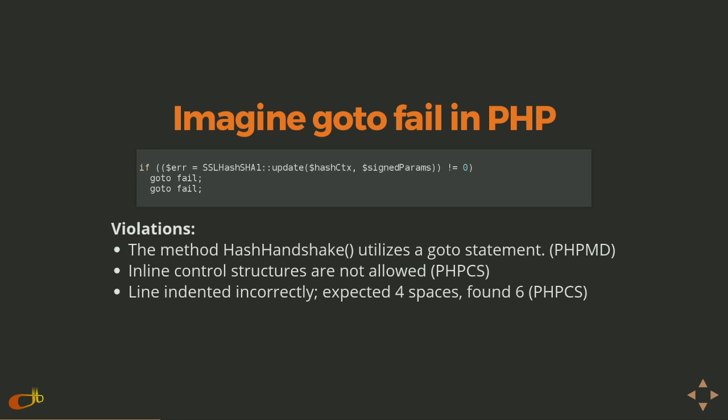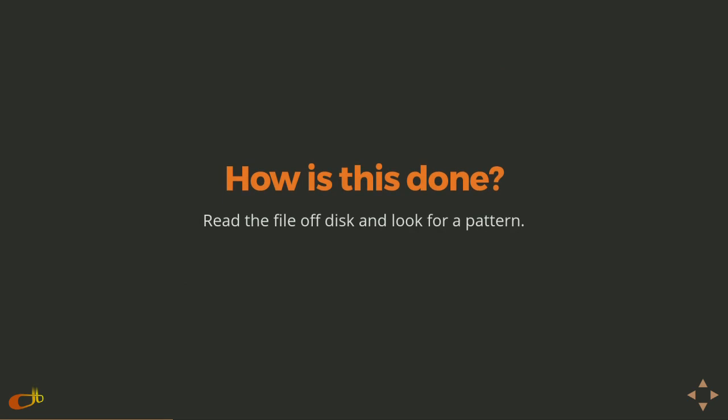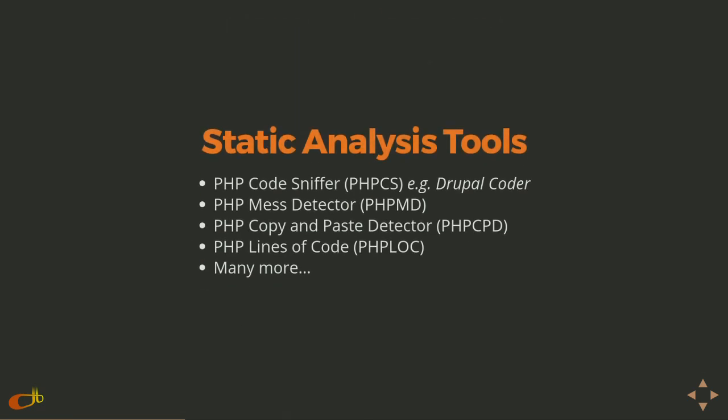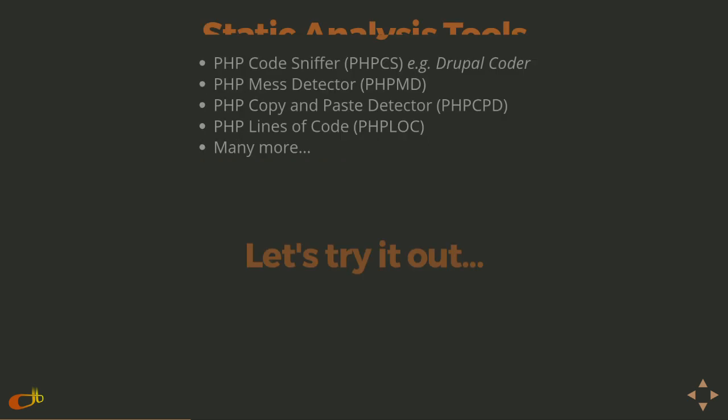Going back to the GoToFail example, if we ran a static analysis checker using Drupal community code sniffs, you'd see that the hash handshake method uses a goto statement — which PHPMD suggests avoiding. Inline control structures not using curly brackets would also get flagged. And the second goto fail, even in an inline control structure, is indented too far. These tools work by reading a file off disk and looking for patterns. There are many tools: a copy-and-paste detector for DRY violations, PHP LOC to gather lines-of-code metrics, and many others — and similar tools exist for other languages.